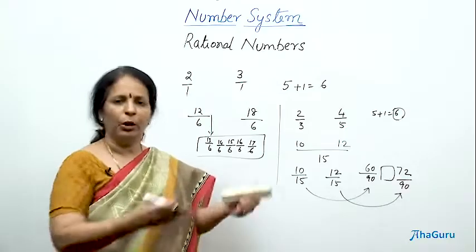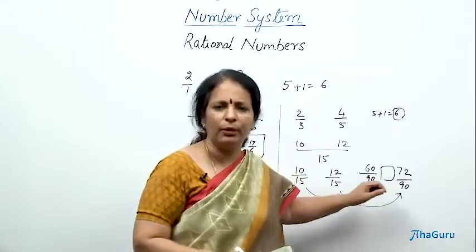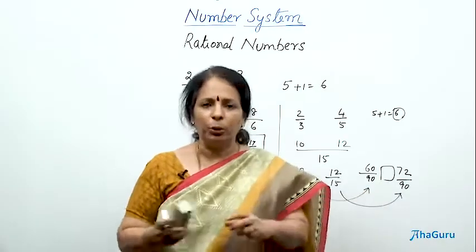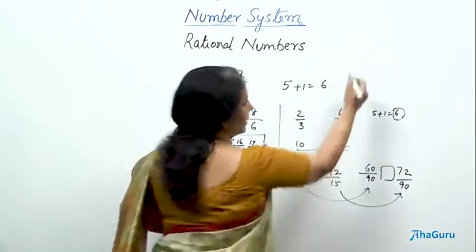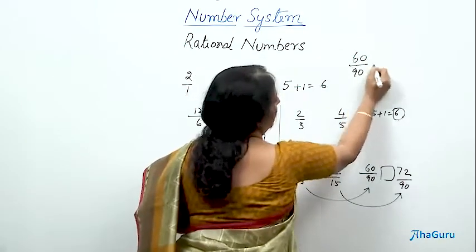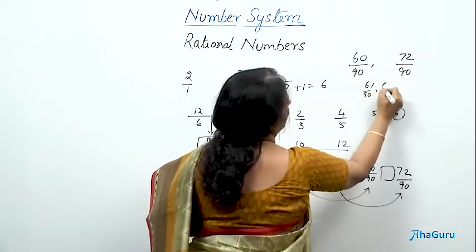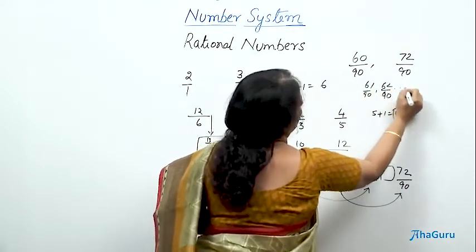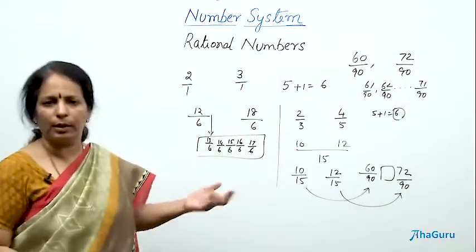You can write all the 11. Take any 5. You will be writing one 5. Your friend will be writing other 5. That is okay. Since there are infinite numbers, it doesn't mean that you and your friend should have the same answer. You can have your own choice. So, between 60 by 90 and 72 by 90, the numbers you are getting is 61 by 90. Then you have 62 by 90 and so on up to 71 by 90. Choose any 5 of your choice and write the answer.